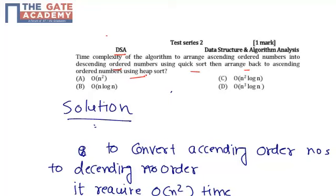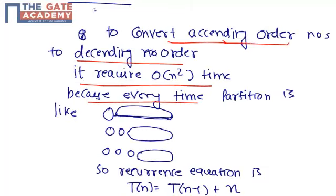So first we apply quicksort and then we apply heapsort. Now to convert ascending order numbers to descending order, it requires O(n²) time because at every time the